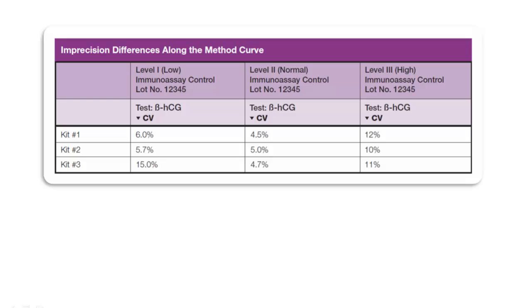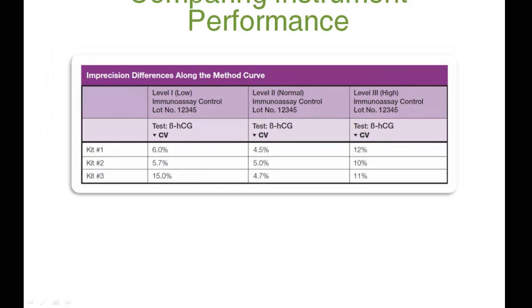Imprecision and inaccuracy are most important at the clinical decision levels. For beta-HCG, the clinical decision levels are at low concentrations, corresponding to early pregnancy in the female and early testicular cancer in the male, and at moderate concentrations to diagnose the progression of pregnancy.